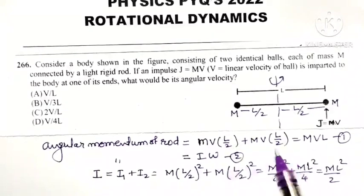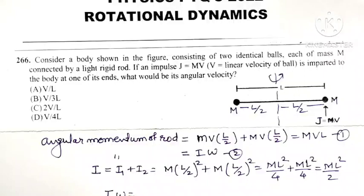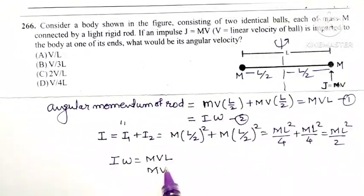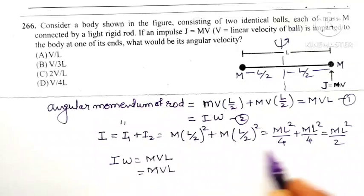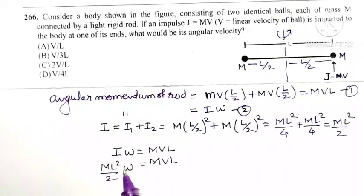Now LHS and RHS of equations 1 and 2 both represent angular momentum, so we can equate the right-hand side. So I into omega is equal to MVL.